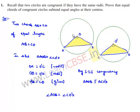Therefore, equal chords of congruent circles subtend equal angles at their centers. That is proved.